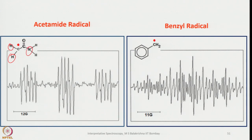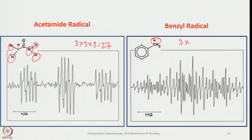For the acetamide radical, we consider coupling with nitrogen, then 2 equivalent hydrogens, then an additional 2 hydrogens. First coupling with N (i=1) gives 3 lines, each splits into a triplet from 2 equivalent H, and those split further into a triplet — giving 3×3×3 = 27 lines total. For the benzyl radical, first it splits into a triplet (3 lines) and then considering 5 equivalent protons giving 6 lines, we arrive at 18 lines total.